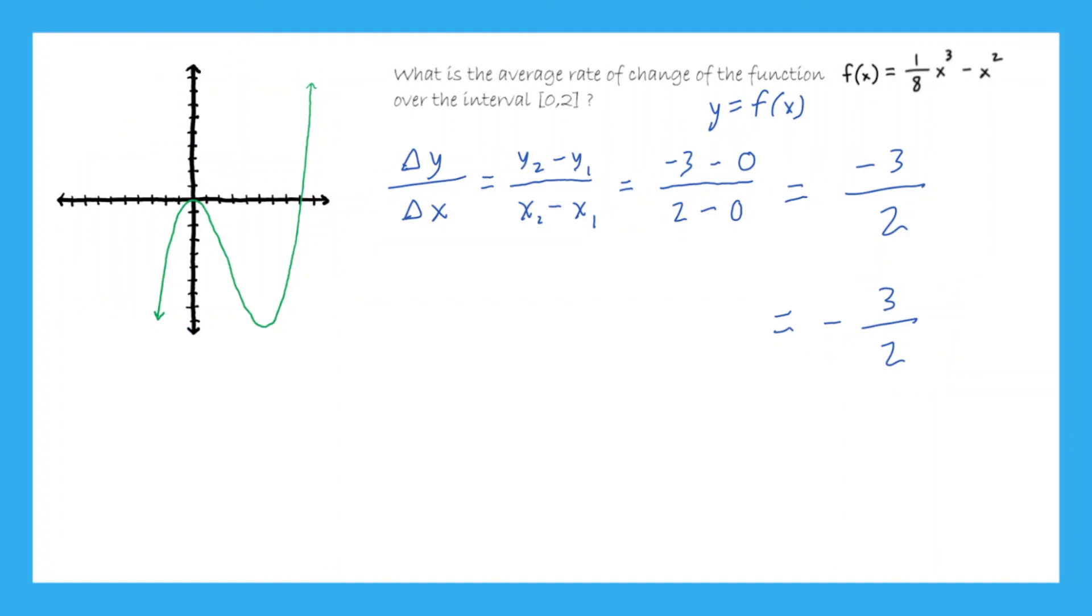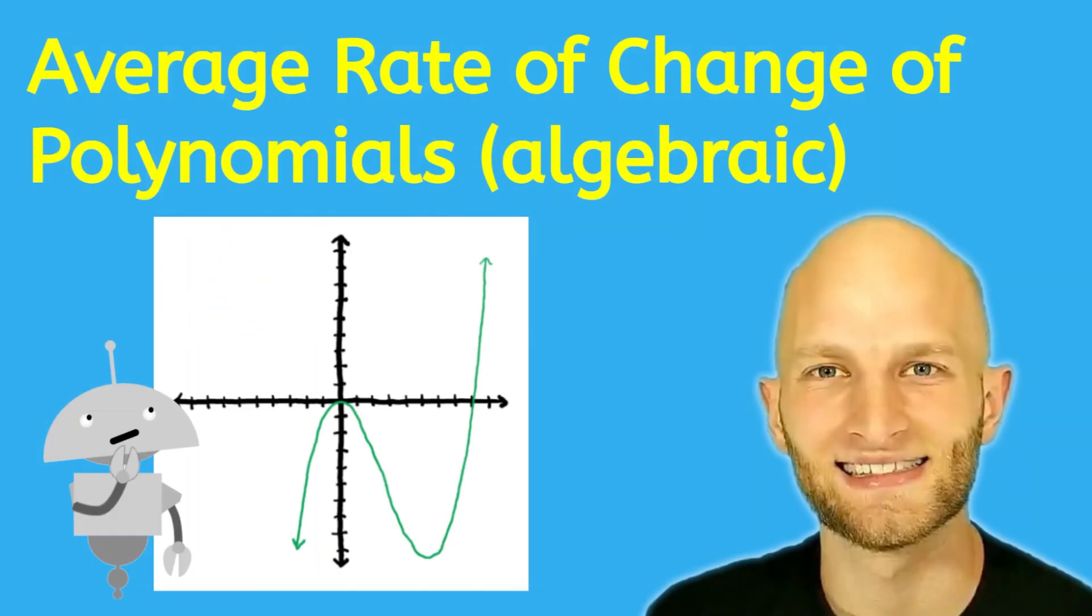So in summary, what we did here was we took the x values from the interval, that is, the first x value became x1, and the second x value became x2, and we used those values to find the y values by plugging in x2 into the function to get y2 and x1 into the function to get y1. And that is how you do it. Lo and behold, finding the average rate of change algebraically of a function is actually not that difficult. And with that, we are finished with this lesson. And remember to always be clever.